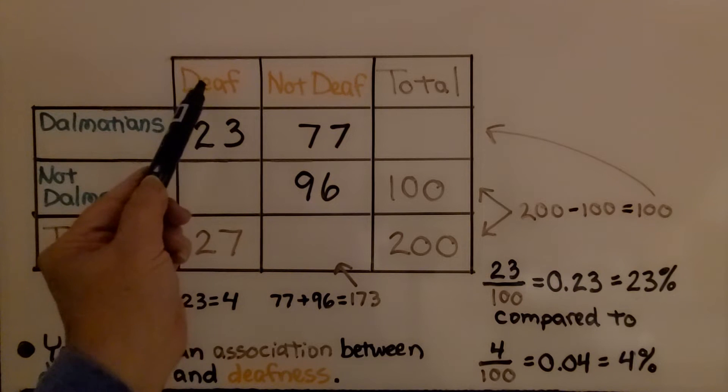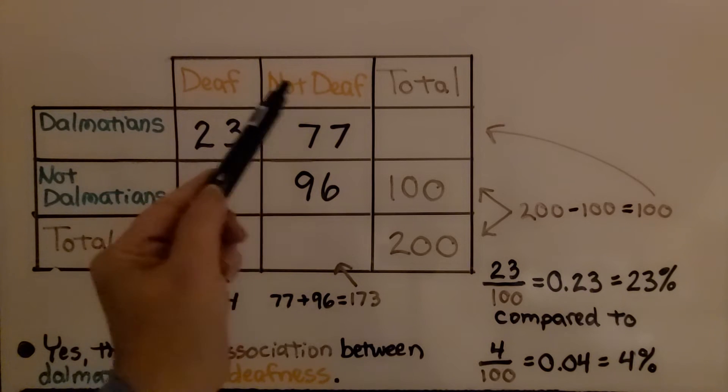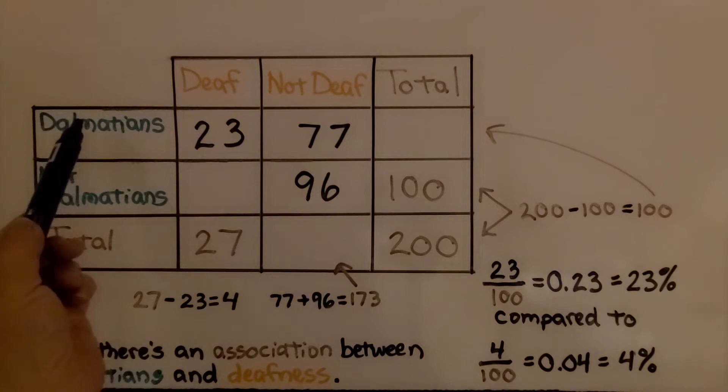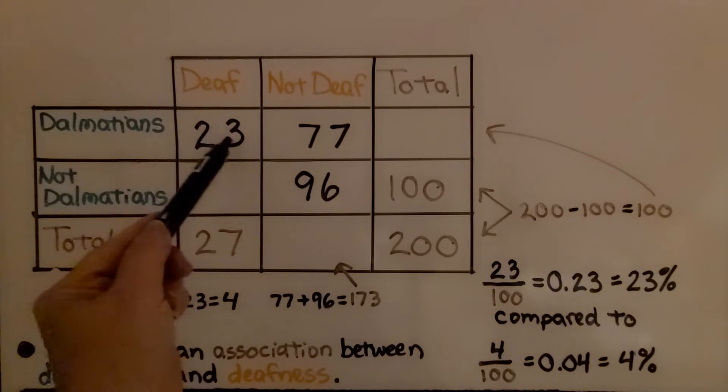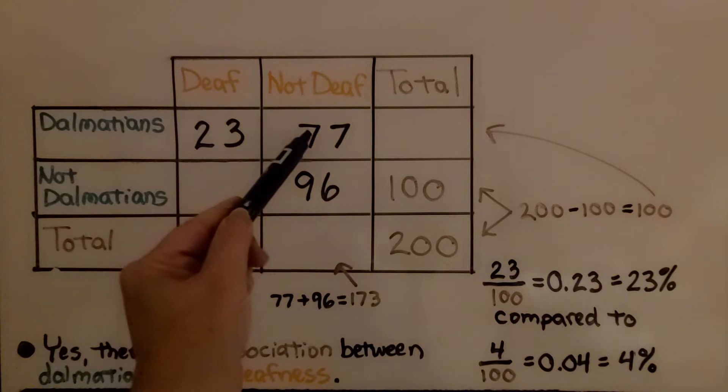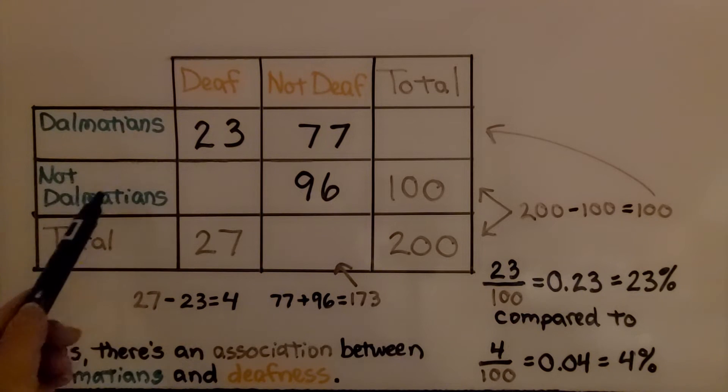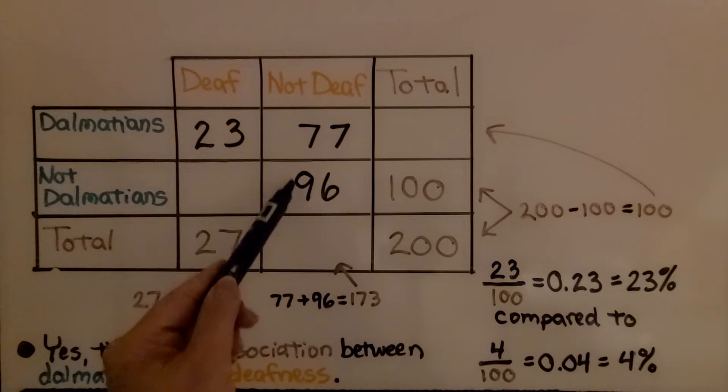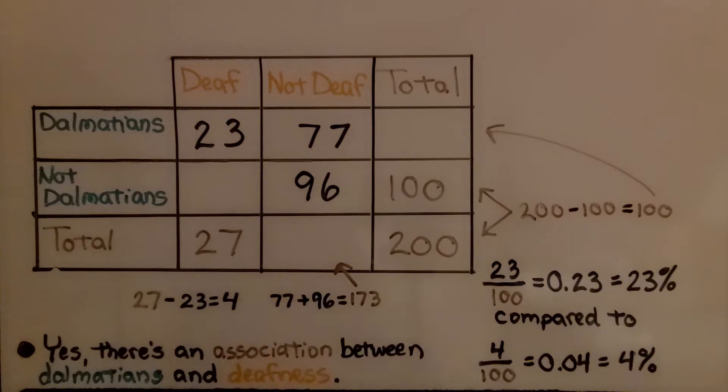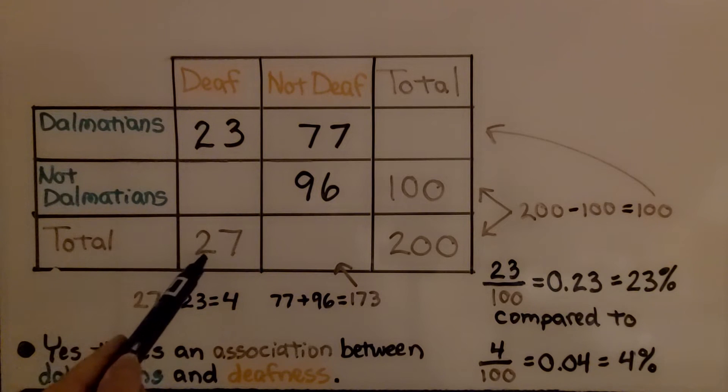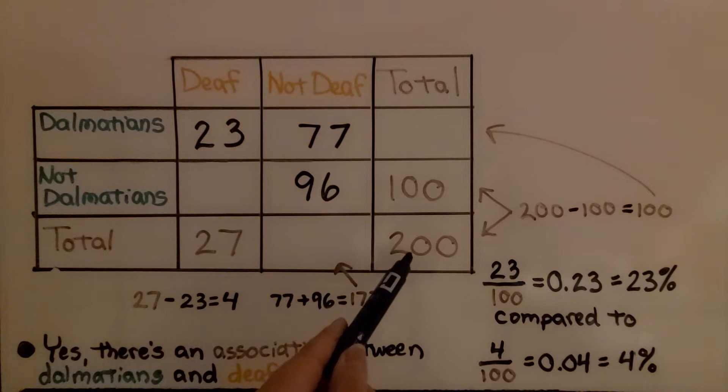Then up here we're seeing deaf and not deaf, and the totals. It's showing us that Dalmatians, that 23 are deaf and 77 are not deaf. It's also showing us that if it's not a Dalmatian, there's 96 that are not deaf out of a total of 100. And it's also showing us that for deaf dogs, there's 27, and it's out of a total of 200.